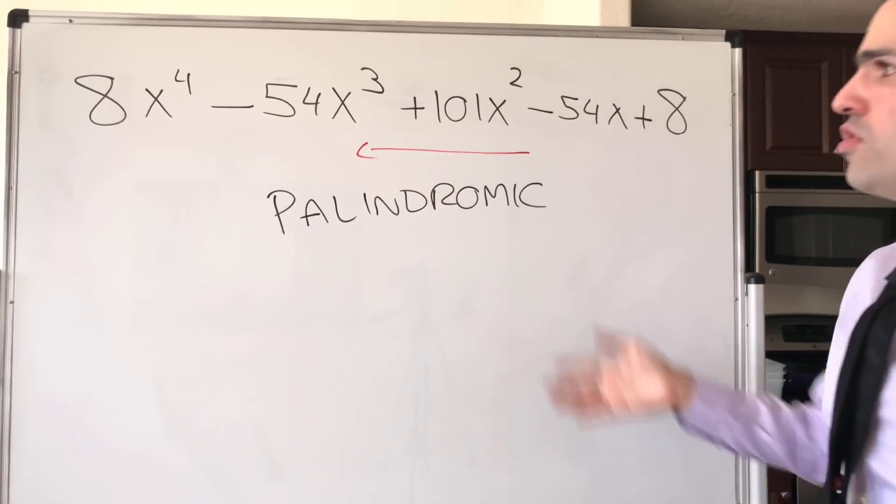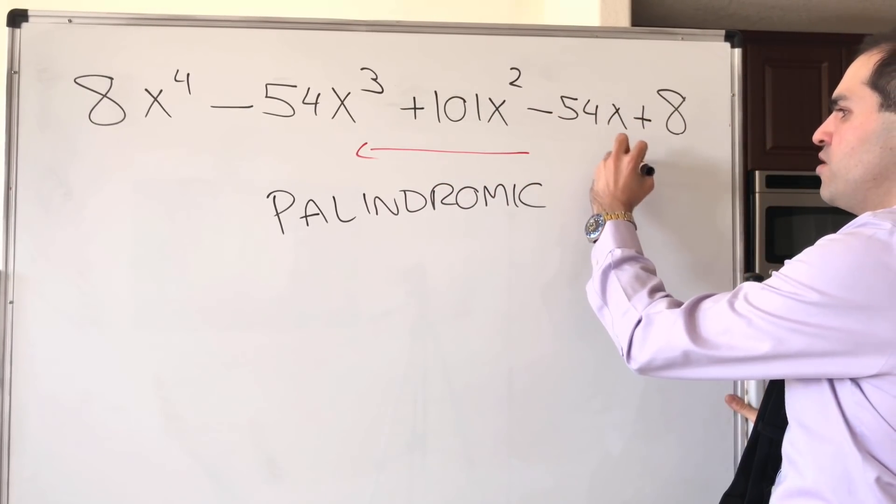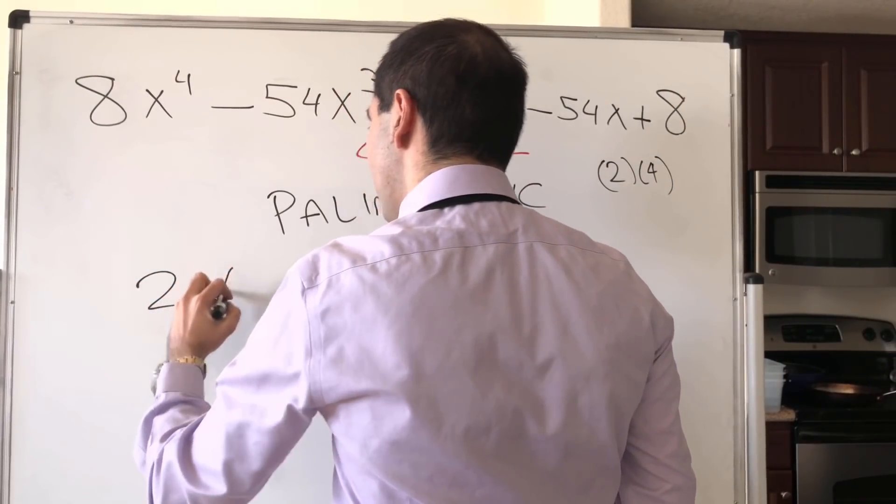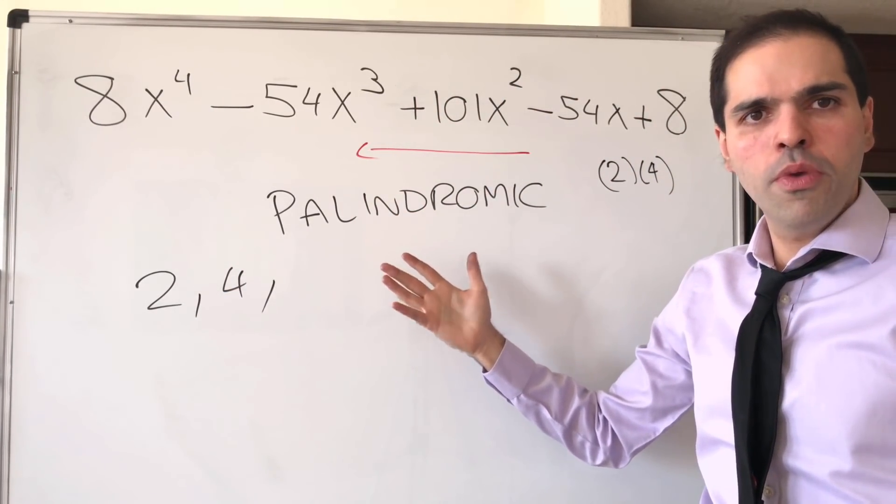And those are very neat, because for example, notice here, 8 is 2 times 4. And it turns out that 2 is a root, and 4 is a root. But the nice thing is, for palindromic polynomials, the roots come in pairs.